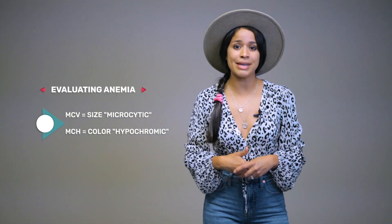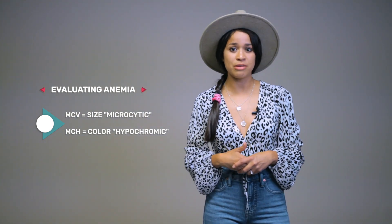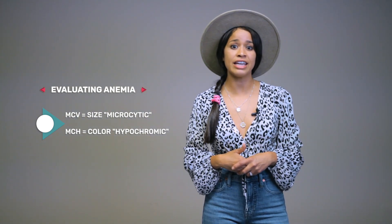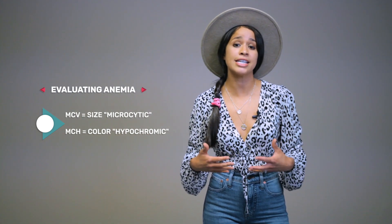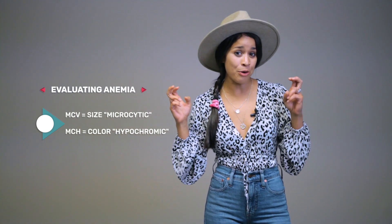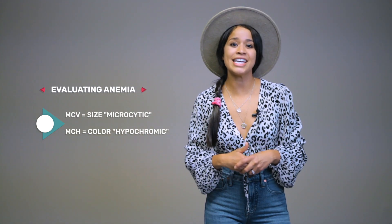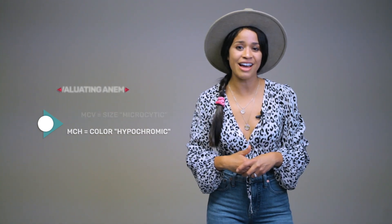The color is your mean corpuscular hemoglobin, or MCH. That gives iron deficiency anemia the title hypochromic, because it is low in color.